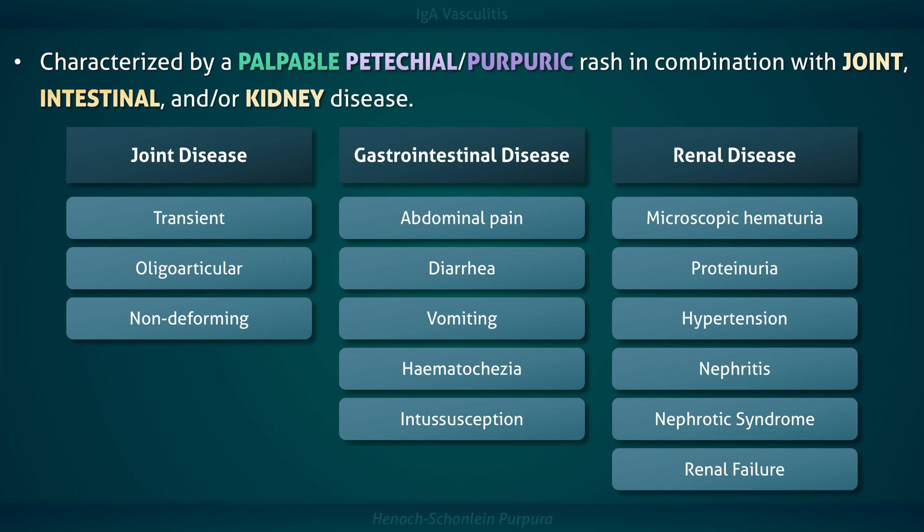Renal disease commonly results in microscopic hematuria and proteinuria. Other manifestations include hypertension, nephritis, nephrotic syndrome, and renal failure. In children, renal involvement is usually mild and resolves spontaneously. In adults, however, it is generally more severe and persistent.